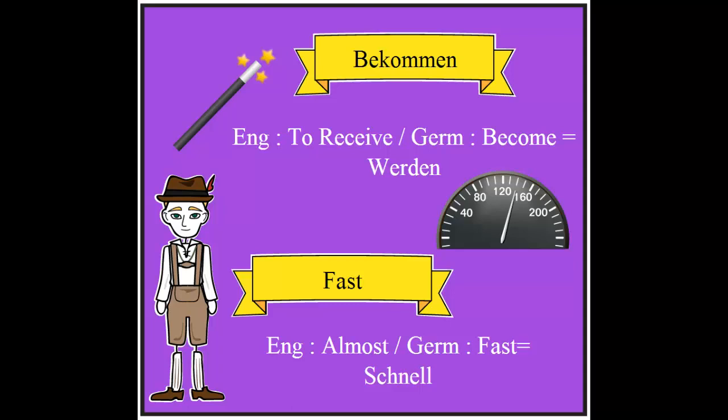'Bekommen' — bekommen is a verb in German and it means 'to get' or 'to receive,' but the German word for the English verb 'to become' is 'werden.' 'Fast' — fast in German means 'almost,' but 'fast' in English is translated to 'schnell' in German.